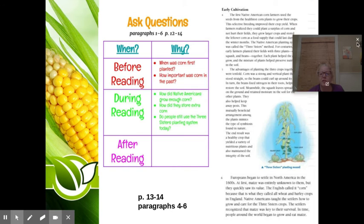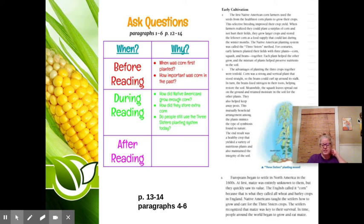Now we're going to go on to the next page. Page 13 has paragraphs 4 and 5, and page 14 has paragraph 6. Let's continue reading paragraph 4, Early Cultivation. The first Native American corn farmers used the seeds from the healthiest corn plants to grow their crops. This selective breeding improved their crop yield. When farmers realized that they could plant a surplus of corn and not hurt their fields, they grew larger crops and stored the leftover corn as a food supply that could last during the winter months. The Native American planting system was called the Three Sisters Method. For centuries, early farmers planted their fields with corn, squash, and beans together.